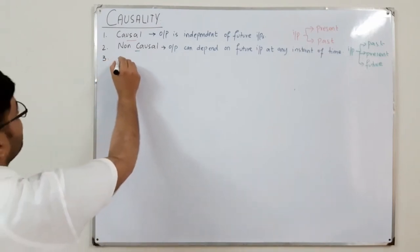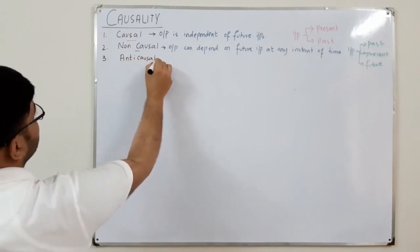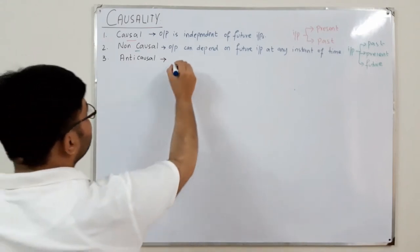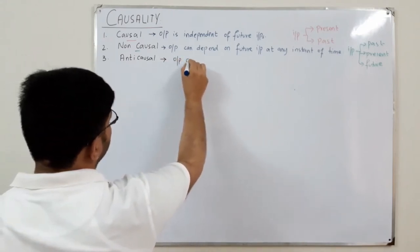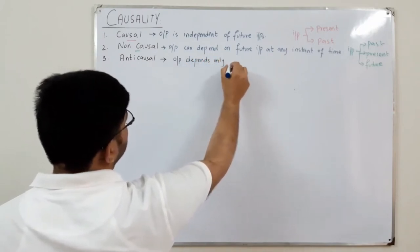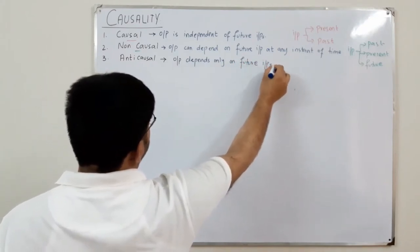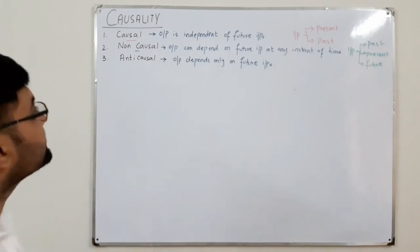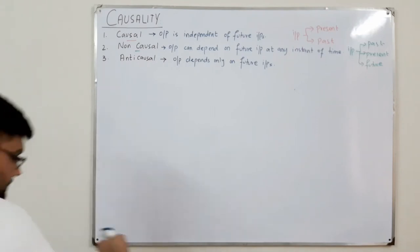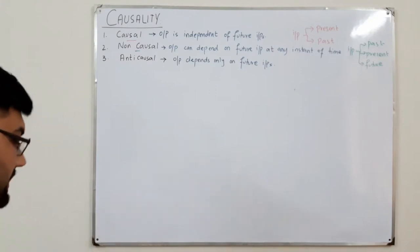We also have another class called the anti-causal system, where the output only depends on future inputs. Anti-causal systems are not practically possible, so they are not of great significance. That covers the definitions of causal, non-causal, and anti-causal.